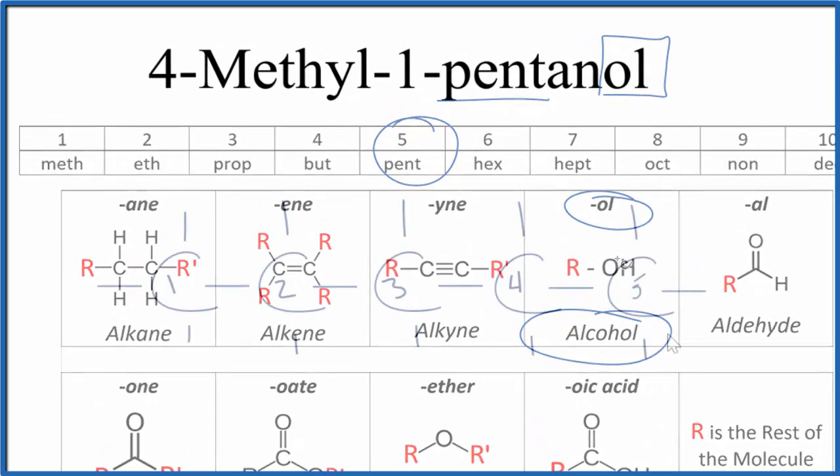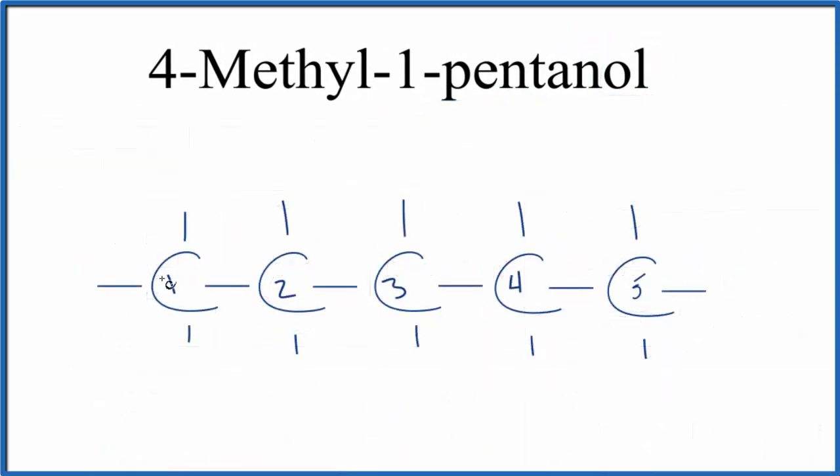Let's write five carbons and number them. So here's our five carbons, all single bonds, these lines, they go to hydrogens. So that's just pentane.